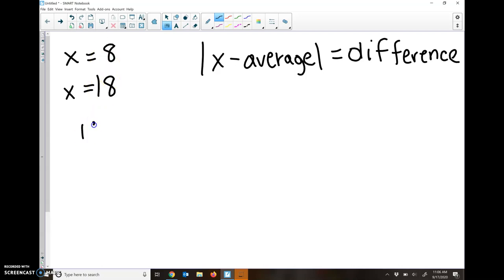So add them up. 18 plus 8 is 26. There's two numbers. 26 divided by 2 is 13. So x minus my average. So x minus and we figured out the average is 13.